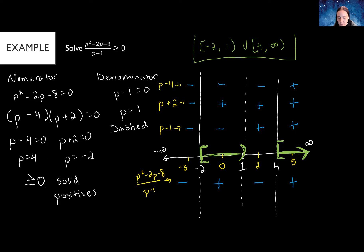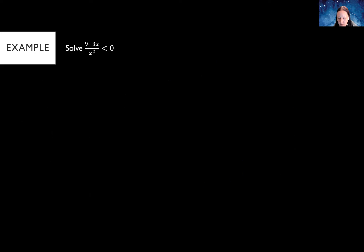Let's move on to another one. This looks simpler than the one we just did, but it actually has a trick to it. We have (9 − 3x) / x², and it's less than zero.